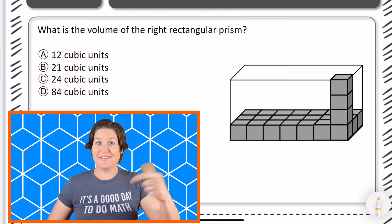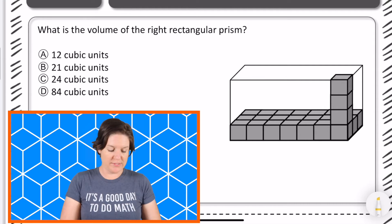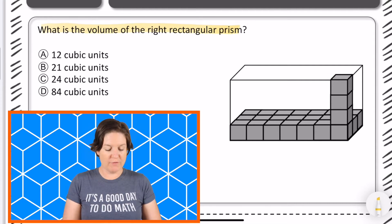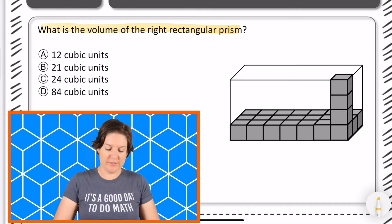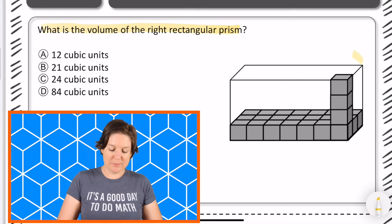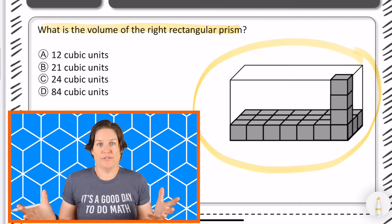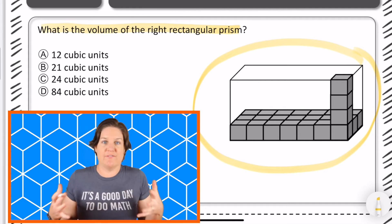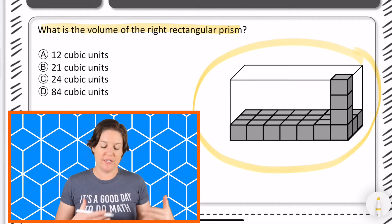Welcome back fifth grade. Let's go over this one. So it says what is the volume of the right rectangular prism? The right rectangular prism is the entire box right there. That box has a fancy name and it's called a right rectangular prism.